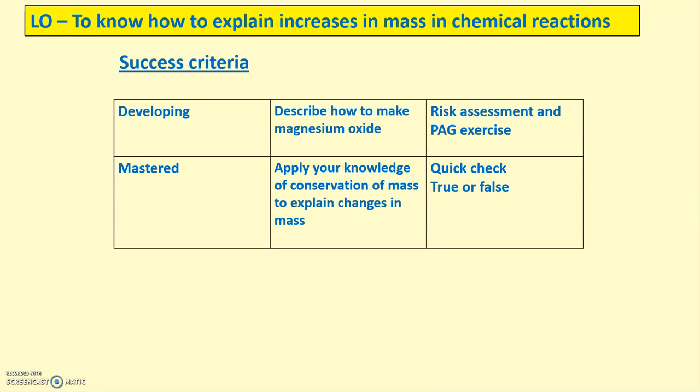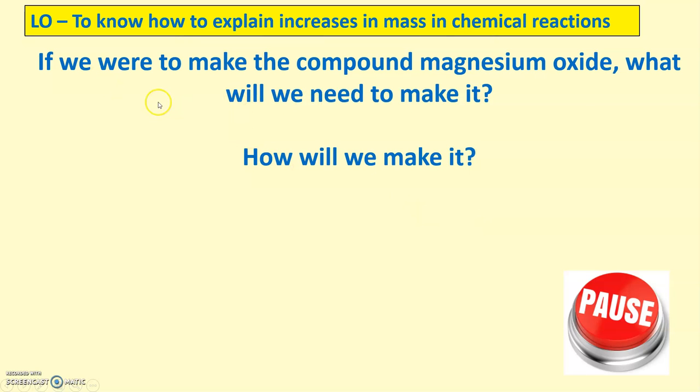So, for the success criteria for this video, to develop the skills of explaining increasing mass in chemical reactions, I'm going to describe how to make magnesium oxide with a risk assessment and a practical exercise. To master this skill, we'll need to apply our knowledge of conservation of mass through a quick check, and then a true or false quiz at the end. So, a question on here, if we were to make the compound magnesium oxide, as shown here, what we will need to make it, and how will we make it? Can you pause the video for 30 seconds and just jot down, or have a little bit of thinking time here, how do you think we would make the compound magnesium oxide?